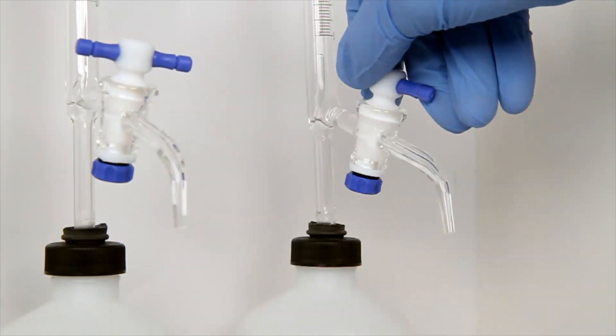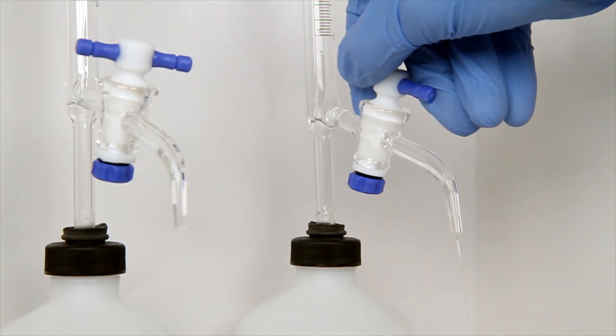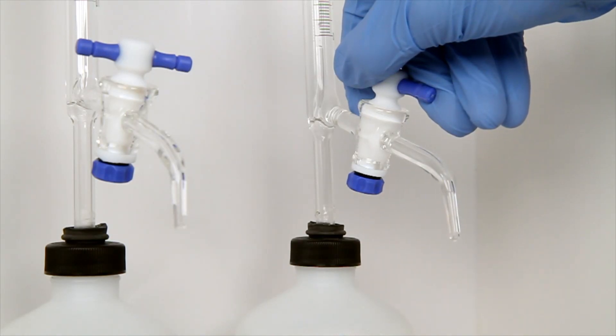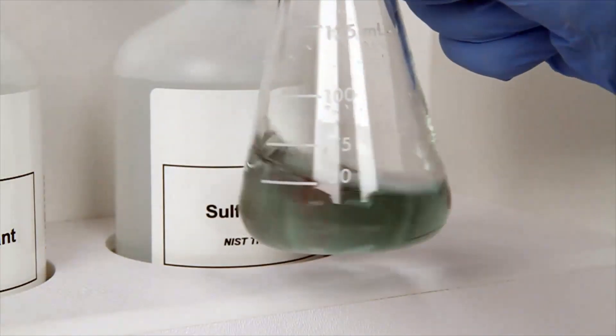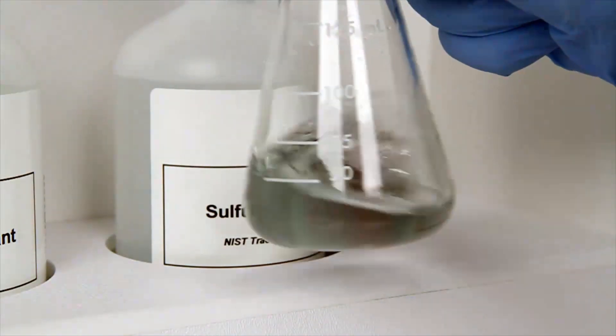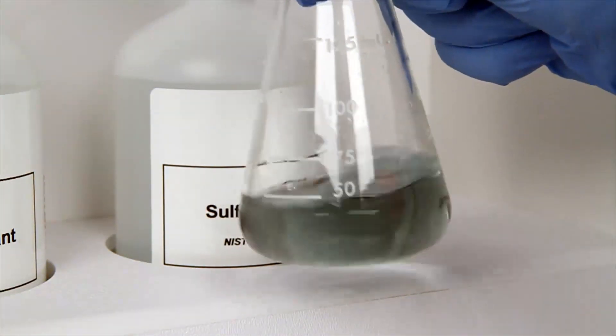The next step is to titrate the sample with sulfuric acid titrant using the burette. Turn the stopcock to add the titrant to your sample. Make sure you are mixing the sample while you add the titrant. As you near the endpoint, turn the stopcock so the titrant is being dispensed slowly. Make sure you are mixing the sample after each drop until the sample color changes from green to red.